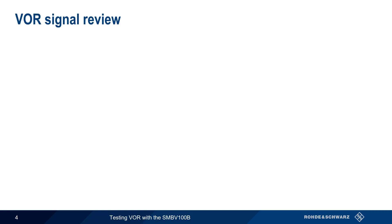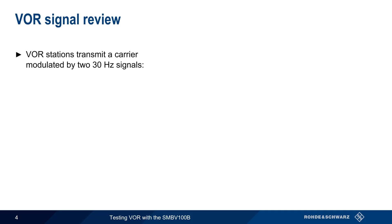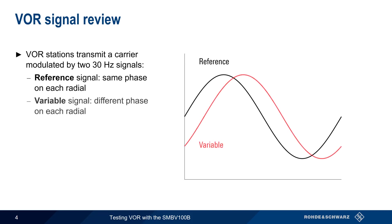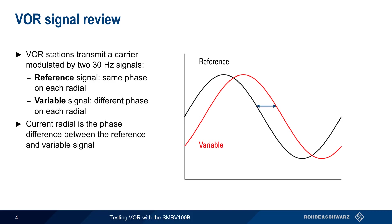Recall that a VOR signal contains a carrier that's modulated by two 30 Hz signals: the reference signal, which has the same phase regardless of which radial we're on, and the variable signal, whose phase is different on each radial. The current radial is the same as the difference between the reference and variable signal. For example, if the phase difference between reference and variable is 45 degrees, this means that we're on the 45 radial.